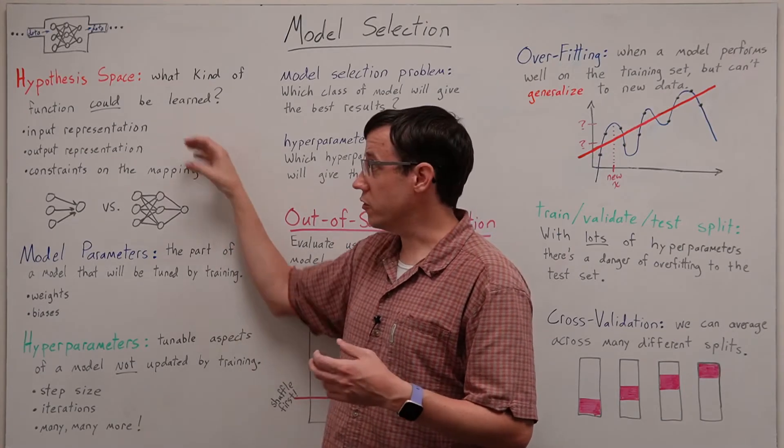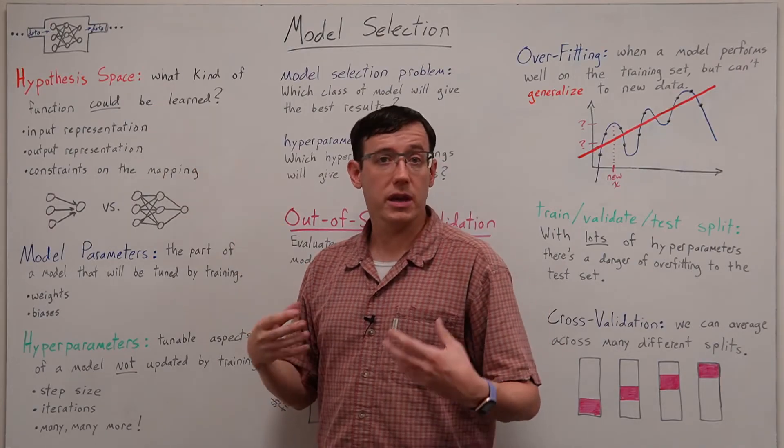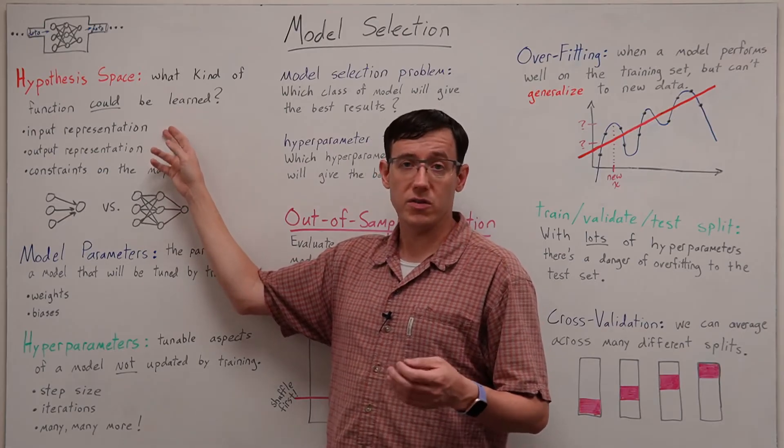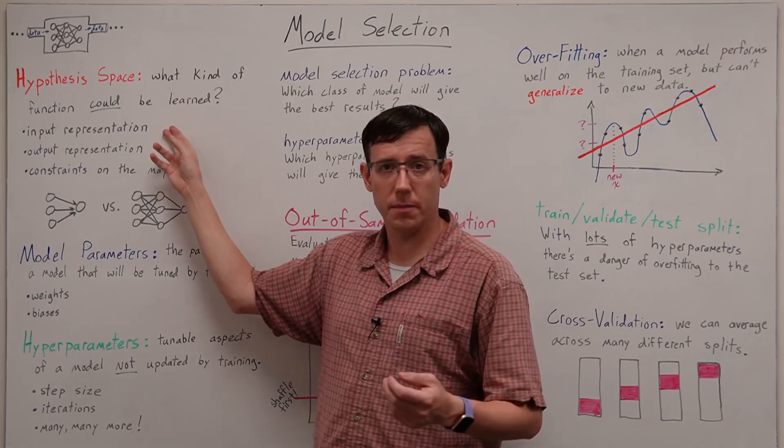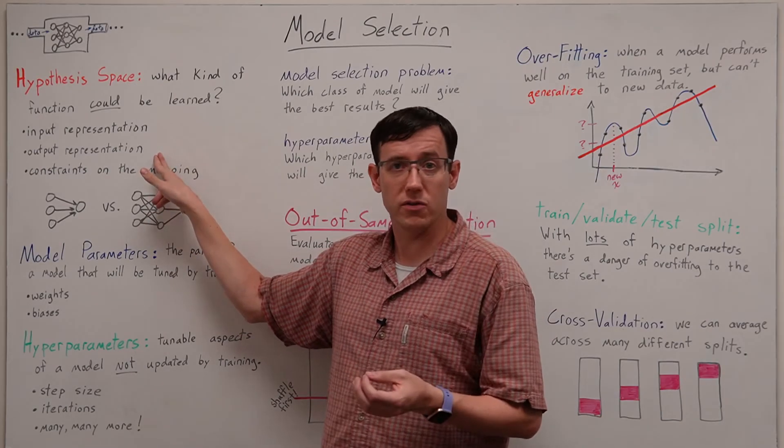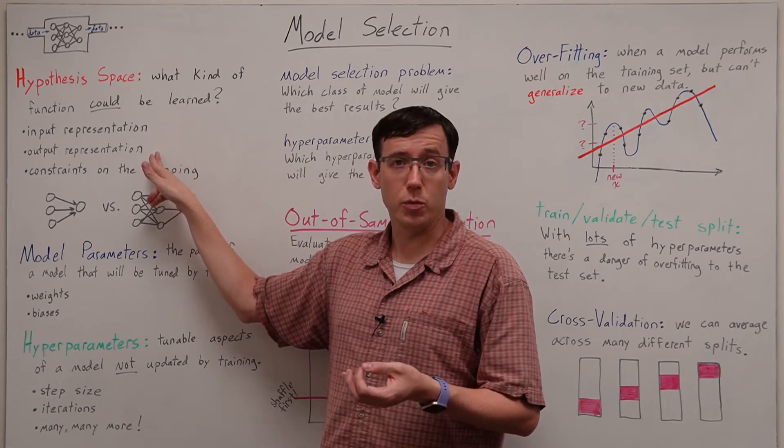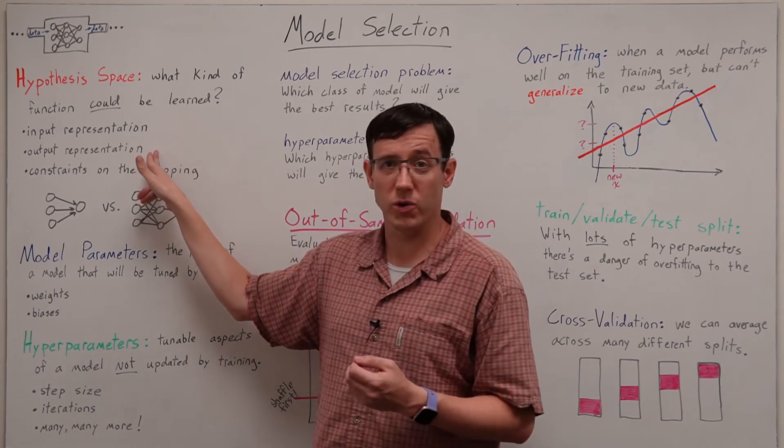This is always constrained by the problem we are solving. In particular, the input representation we have chosen for our data may specify the dimension or other aspects of the model, and the type of output required by our problem also constrains the possible functions. For example, by requiring them to be discrete in the case of classification or continuous for regression.